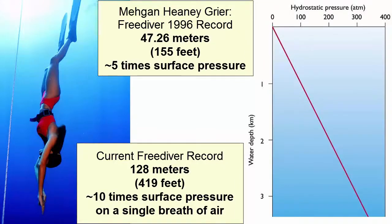Marine organisms that live at depth have to handle an increase of one atmosphere of pressure for every 10 meters of depth. At one kilometer below the surface, the pressure is 100 atmospheres — 100 times surface pressure. In addition to potentially crushing rigid gas containers, any other rigid internal cavities filled with only air can also be crushed, including eardrums, nasal cavities, and lungs.